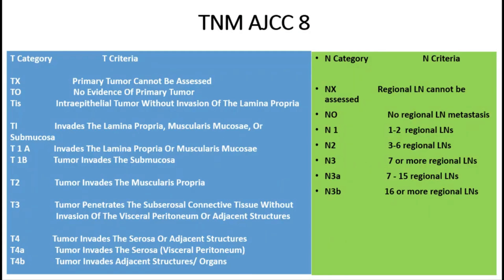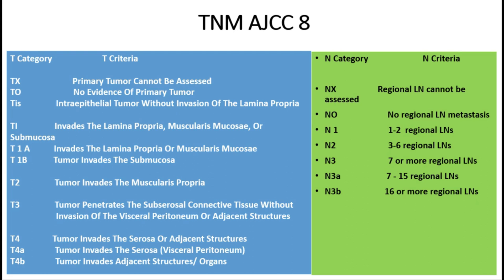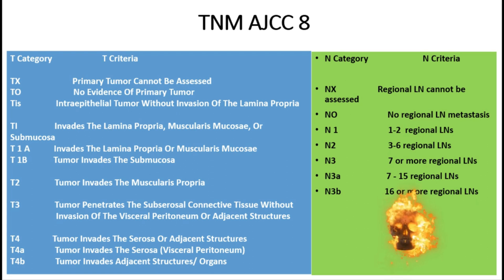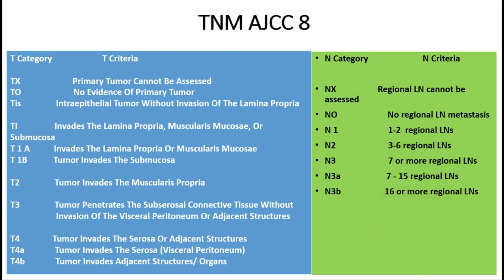TNM staging as per the AJCC 8th edition: TX — primary tumor cannot be assessed; T0 — no evidence of primary tumor; TIS — intraepithelial tumor without invasion of the lamina propria. T1 is further divided into T1A and T1B. T1A is when the tumor invades the lamina propria or muscularis mucosae, and T1B invades the submucosa. T2 is involvement of the muscularis propria in all organs except the gallbladder, which lacks a submucosa, where T1B is muscle involvement.